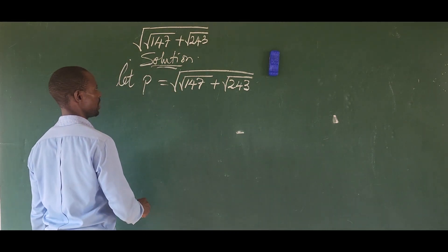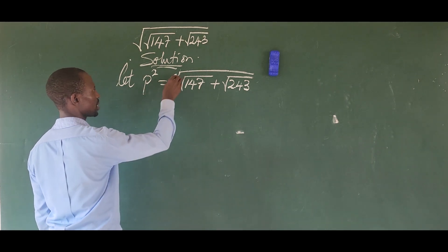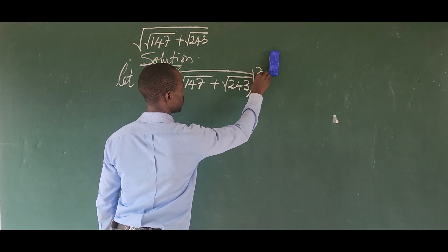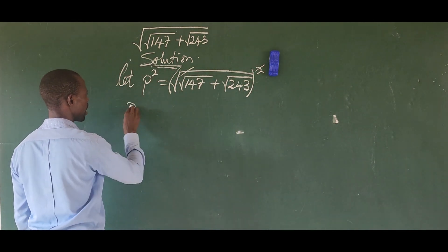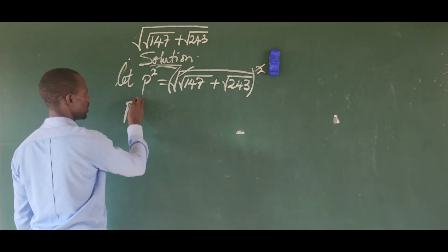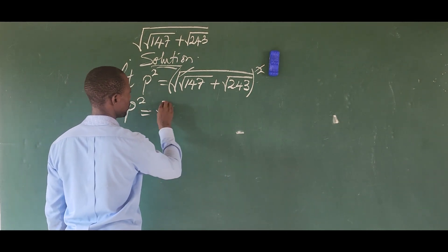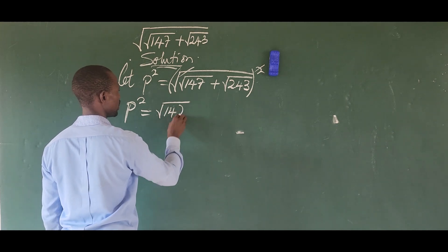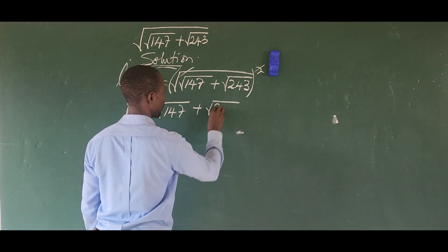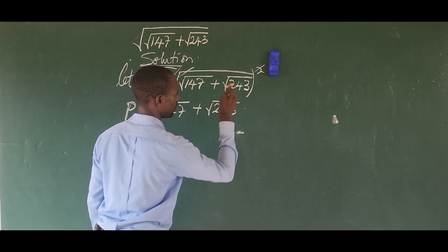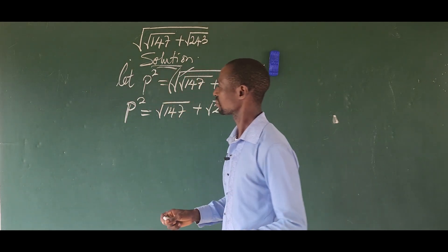We need to eliminate this big square root radical, so we take the square of both sides. This gives us p squared is equal to the square root of 147 plus the square root of 243.